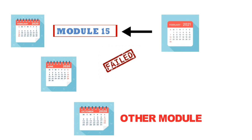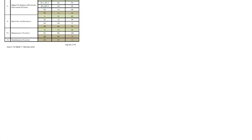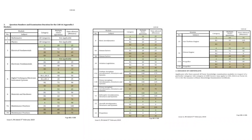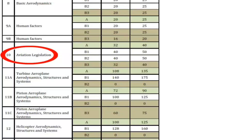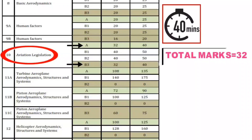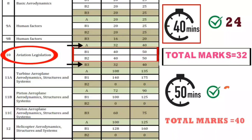Another point: if in a failed attempt (FAB session) you gave Module 15 and failed again, you have to wait 1 year from that FAB session to give the module again. There is also a table covering the time duration and total marks for each particular module. For example, for Module 10, Category A and B3 have 32 total marks with a 40-minute duration, requiring 24 correct answers to pass, while for B1 and B2 it is 40 marks, 50 minutes, with a passing mark of 30.